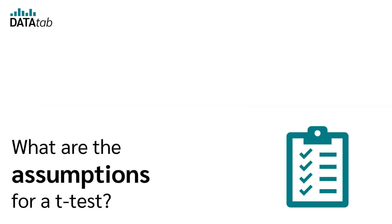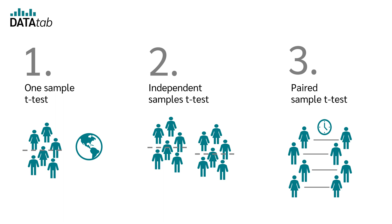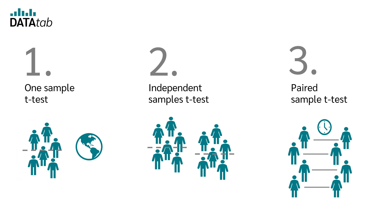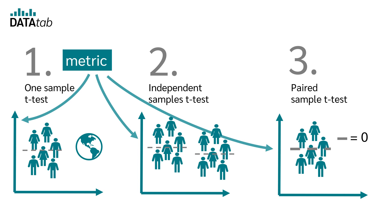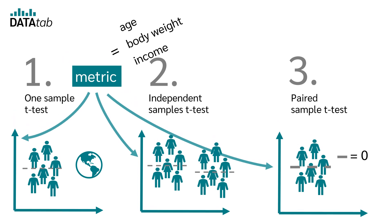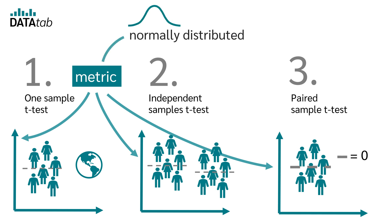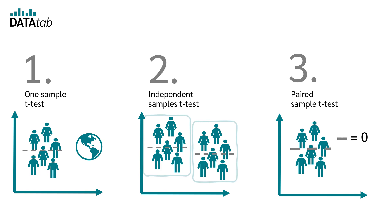What are the assumptions for a t-test? First, we need a suitable sample. In the one-sample t-test, we need a sample and a reference value. In the independent t-test, we need two independent samples, and in the case of a paired t-test, a paired sample. The variable for which we want to test whether there is a difference between the means must be metric. Examples of metric variables are age, body weight, and income. A person's level of education, for example, is not a metric variable. In addition, the metric variable must be normally distributed in all three t-test variants.